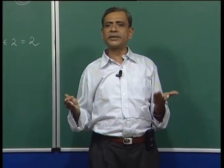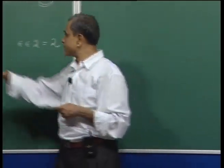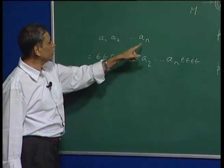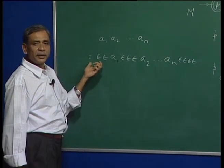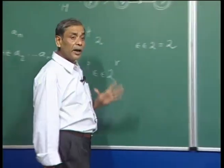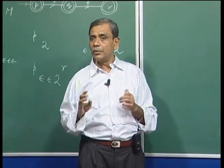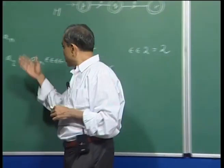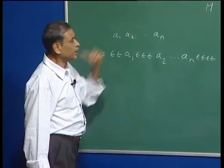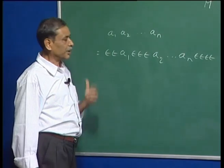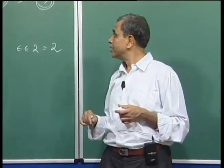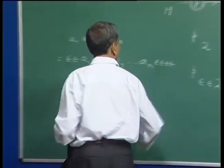When a machine with epsilon transitions receives an input string, and I want to figure out which states the machine can go to on scanning this string, I need to take care of all such padded strings — not just a1, a2, ..., an, but also strings with zero or more epsilons padded between symbols, in front, and at the end. It appears we have a hard task to figure out which states the machine can be in, but as we will see, this problem can be handled quite nicely and simply.